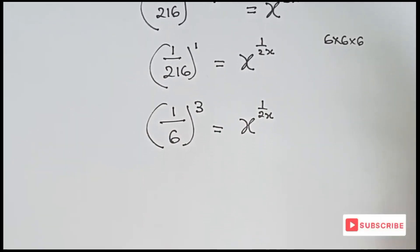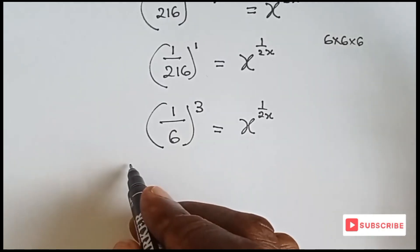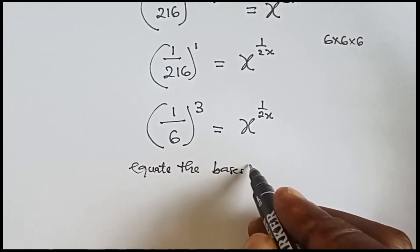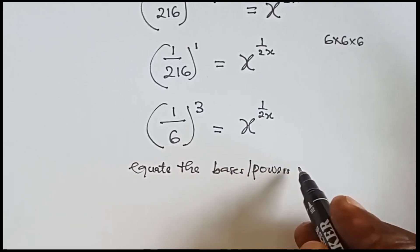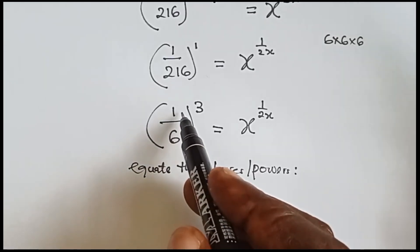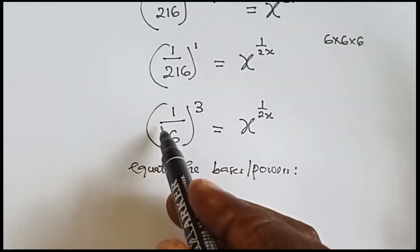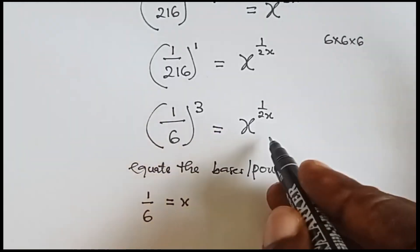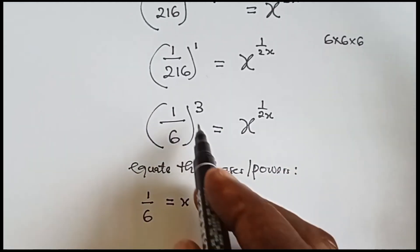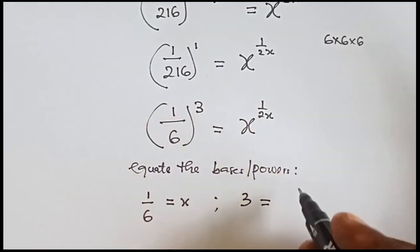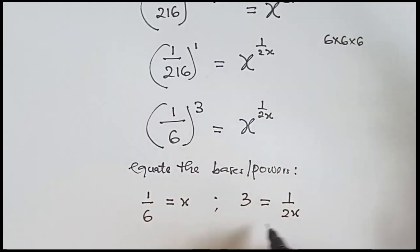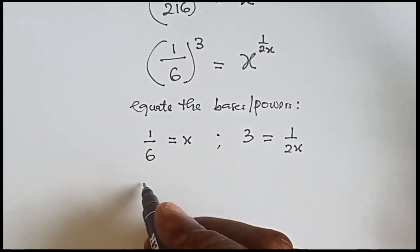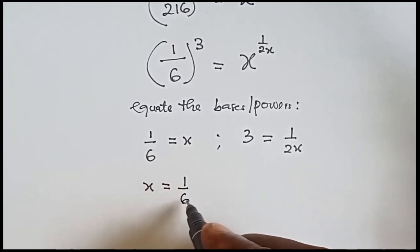From here we can equate both the bases and the powers. So let's equate the bases and also the powers. If we equate the bases, it means 1 over 6 equals to x. And when we equate the powers, we have 3 equals to 1 over 2x. So here we already have x equals to 1 over 6.